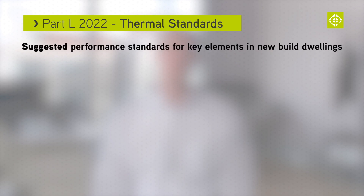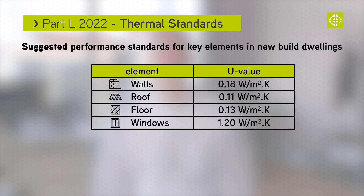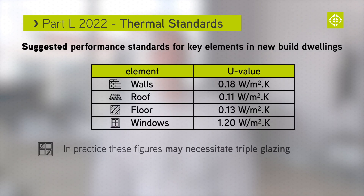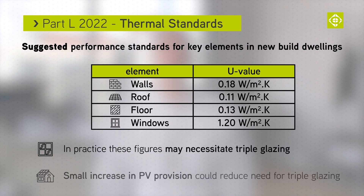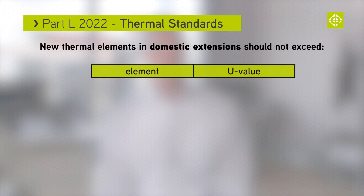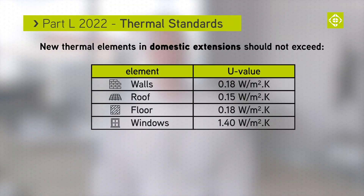These are the suggested U-values for new build houses. You may require triple glazed windows, but increasing PV by a small amount could help you avoid triple glazing. The Part L update also affects domestic extensions — new thermal elements to extensions should not exceed the U-values shown on screen.